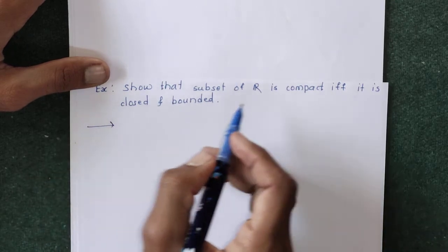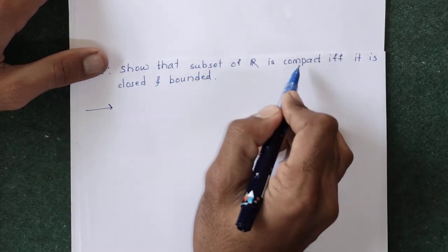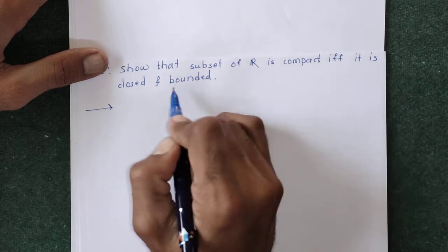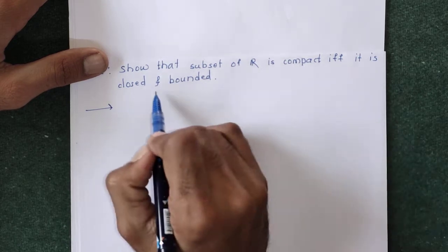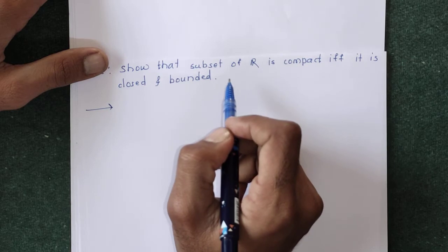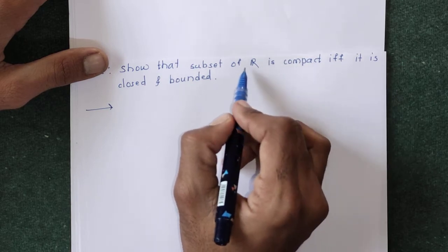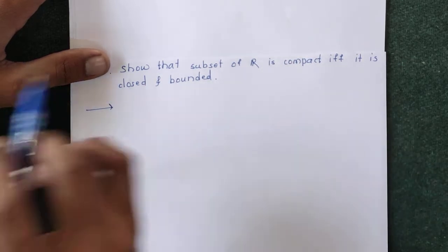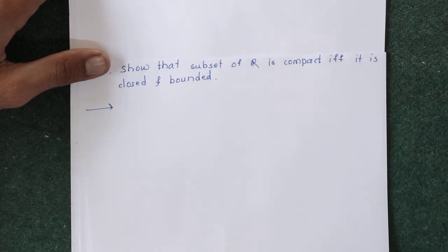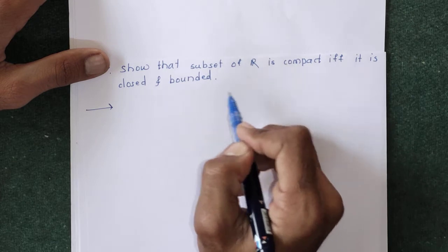For the solution of this example, first we have to prove: if a subset of R is compact, then it is closed and bounded. In the converse part, if we suppose the set is closed and bounded, we have to prove that set is compact. If the subset of R is compact, then by the previous theorem — seen in previous videos — a compact set is closed and bounded.